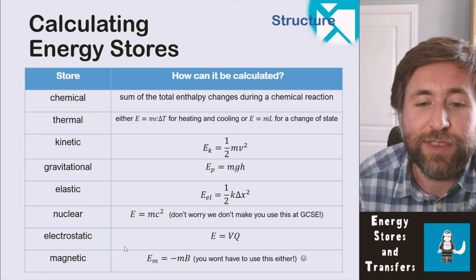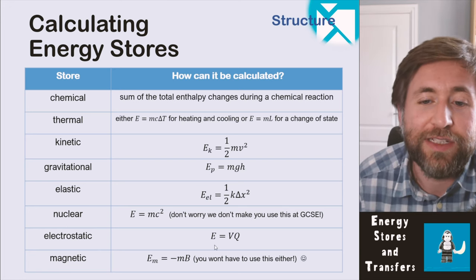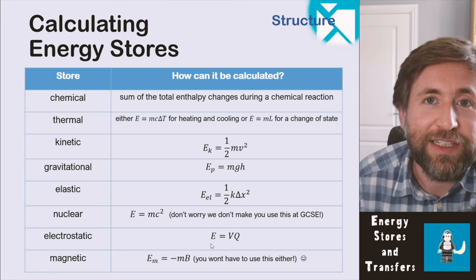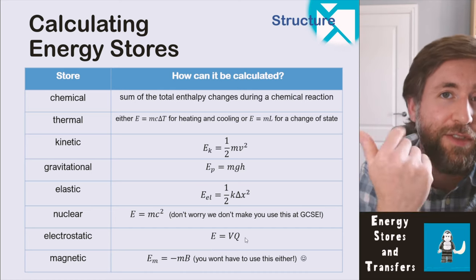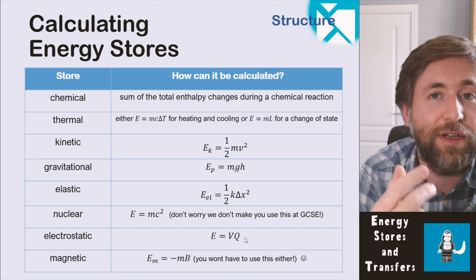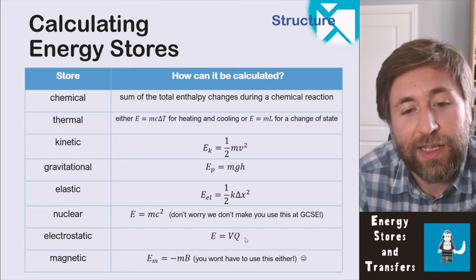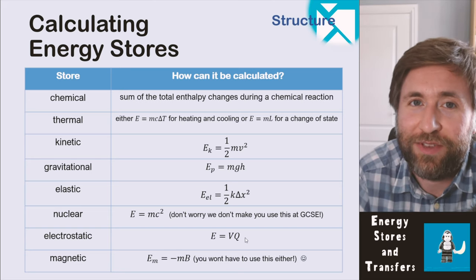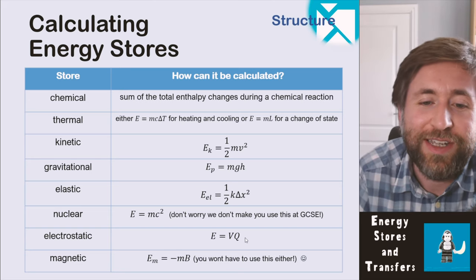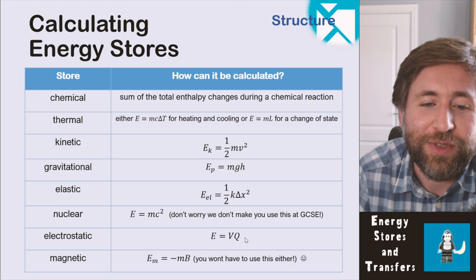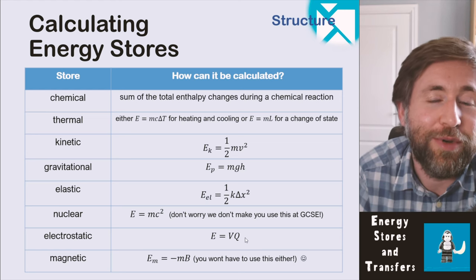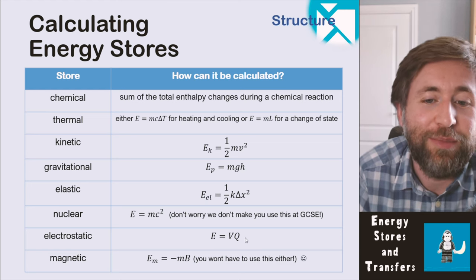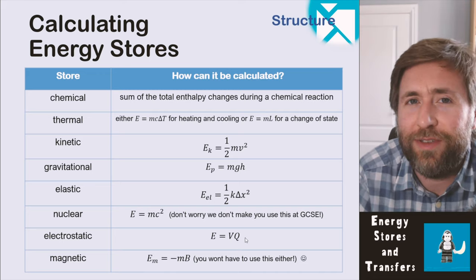For the electrostatic store there are several approaches: energy = potential difference × charge, or energy = potential difference × current × time. For magnetic energy — which you don't need at GCSE — it is the magnetic moment multiplied by the magnetic field strength.